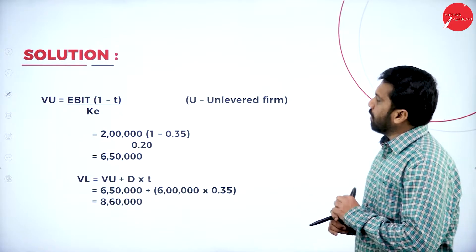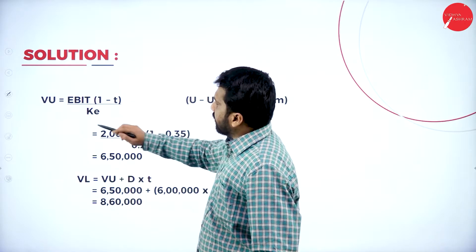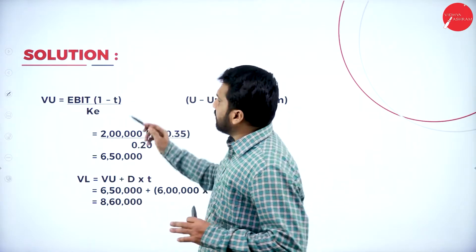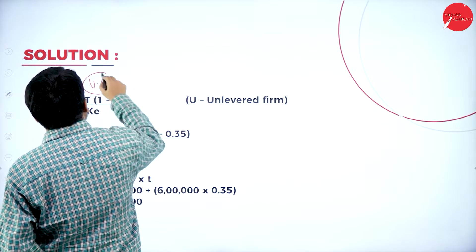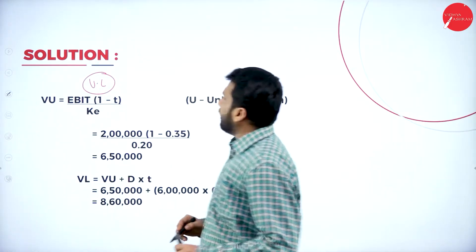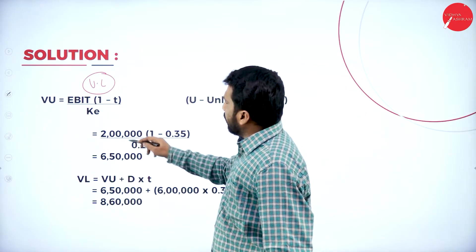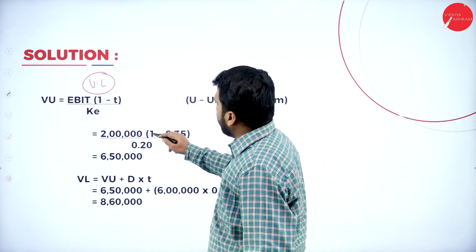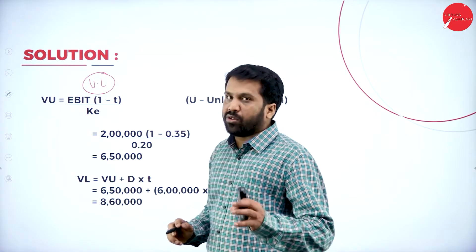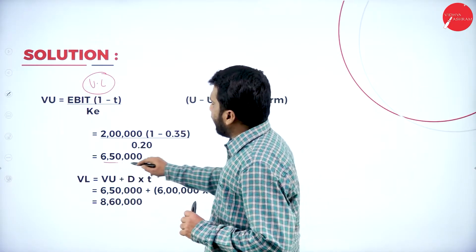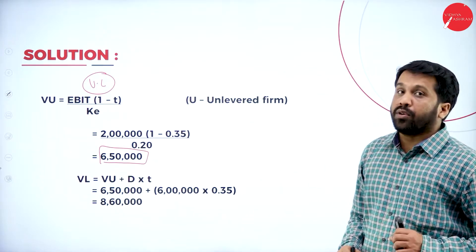First, we calculate for the unlevered firm U. Formula: VU = EBIT × (1 − T) divided by cost of equity. EBIT is 2 lakh, tax rate is 35%, so (1 − 0.35) = 0.65, and cost of equity is 0.20. Therefore VU = 2,00,000 × 0.65 divided by 0.20 = 6,50,000. Remember: VU stands for unlevered firm value, VL stands for levered firm value.